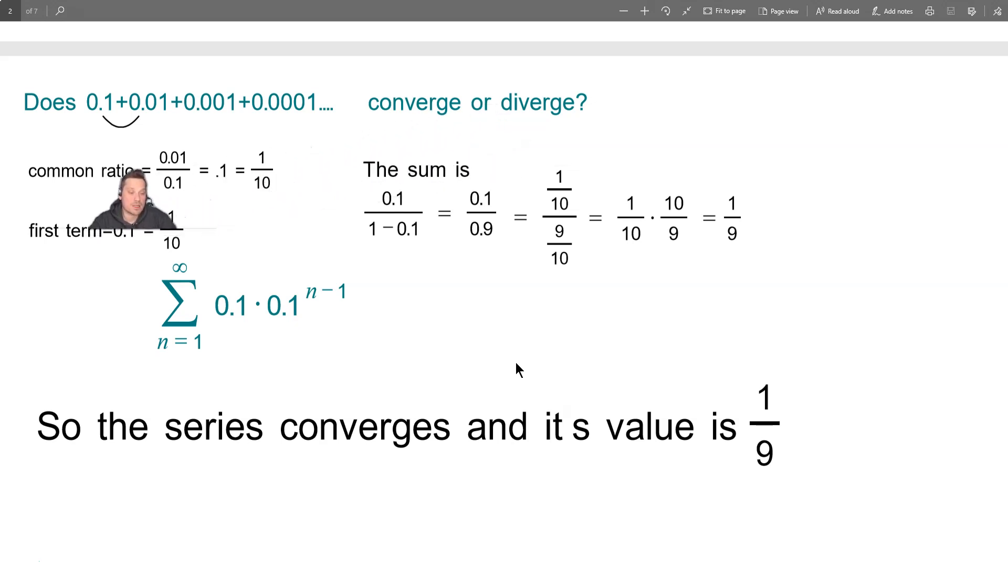So the common ratio is formed simply by dividing. For example, 0.01 by 0.1. So 0.01 divided by 0.1 is 0.1, which as a fraction is 1/10.